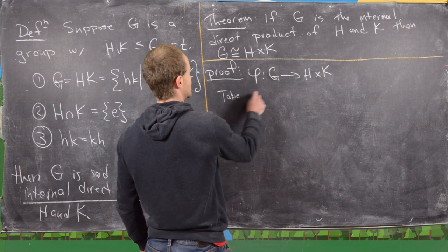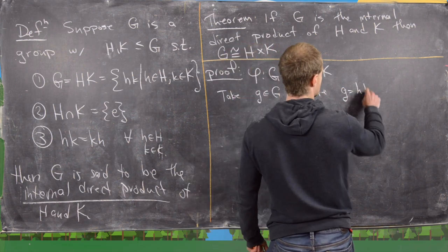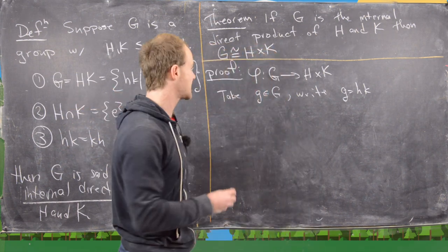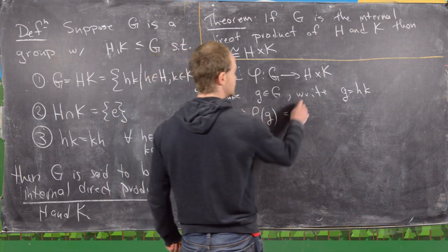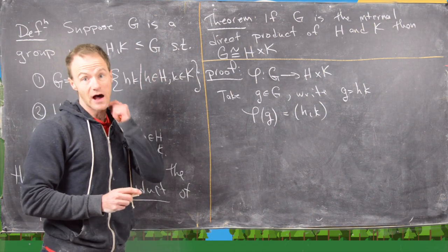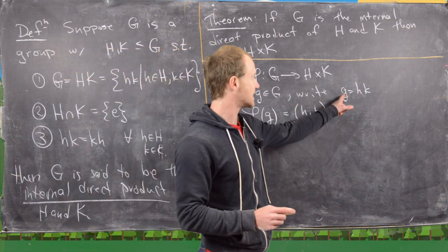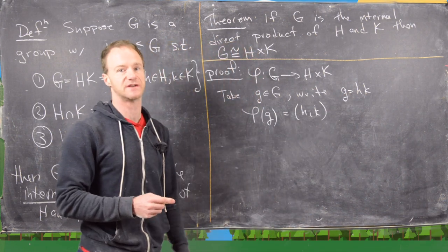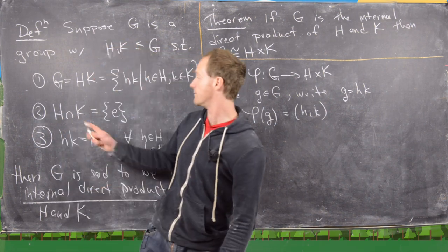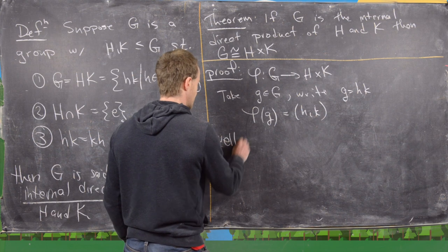Take g in G. We know we can write it as g equals h times k because of the decomposition condition, and then we define phi of g to be the ordered pair (h, k). It's really important to check that this is well-defined, because a priori we don't know it's impossible to write g as different versions of h times k — maybe we can write it as h times k and also as h prime times k prime, where those are different elements from H and K.